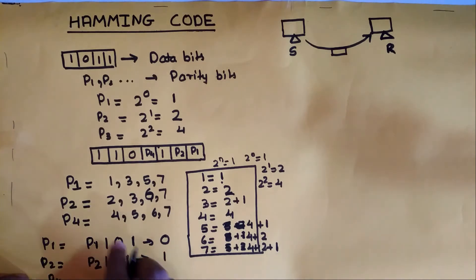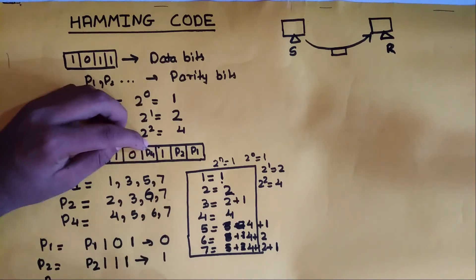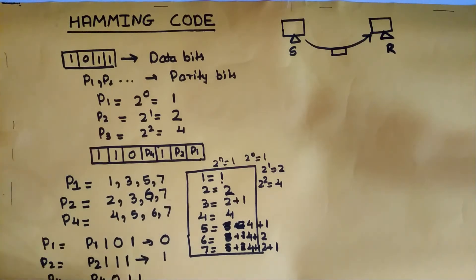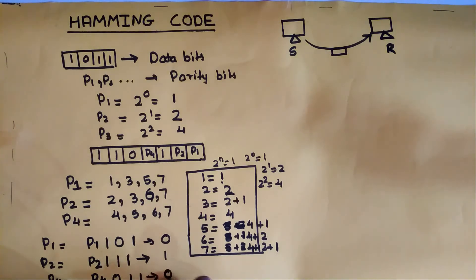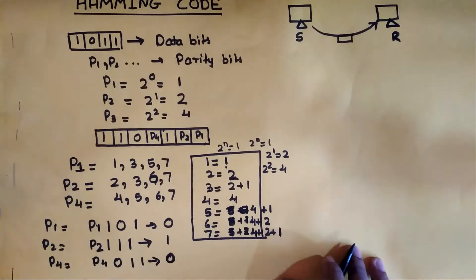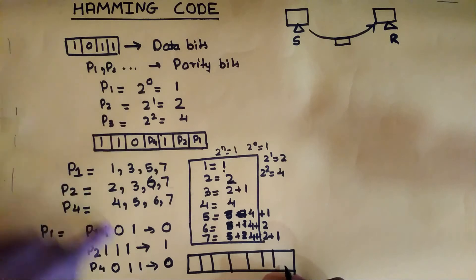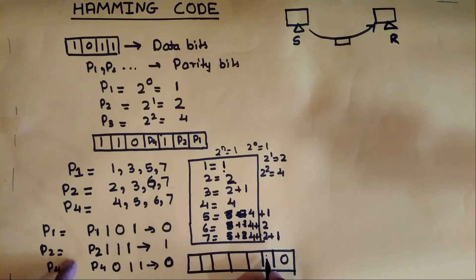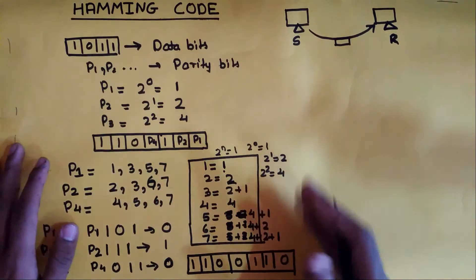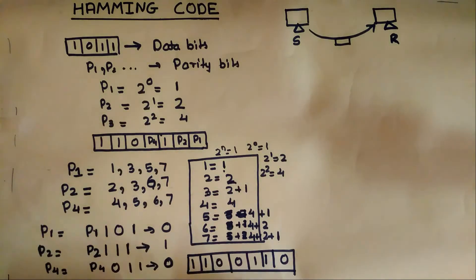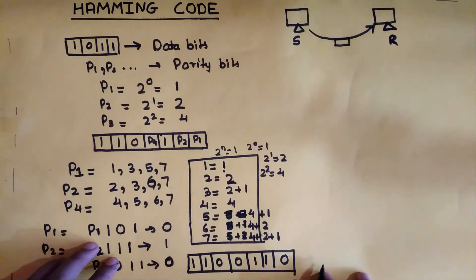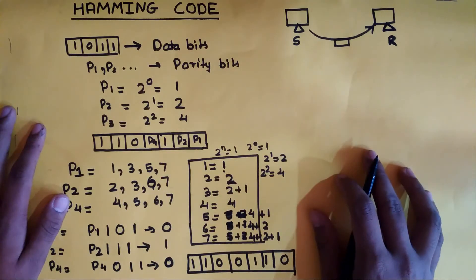Now for P4, which covers positions 4, 5, 6, and 7: position 5 is 0, position 6 is 1, position 7 is 1 — that's an odd number of 1s, so P4 is set to... wait, there are two 1s which is even, so P4 equals 0. So P1=0, P2=1, P4=0. The complete 7-bit codeword combining data bits and parity bits is: 0, 1, 1, 0, 0, 1, 1.